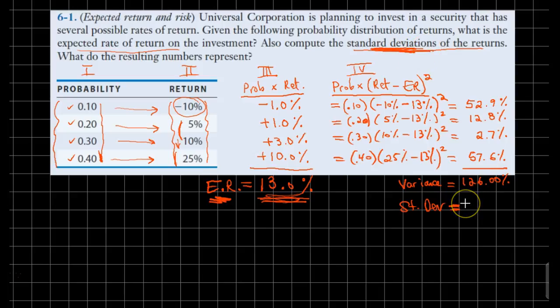So the question makes it specific that that's what we need. The standard deviation. Which is basically the square root of that 126. Taking the square root, we realize the answer to be 11.22%. And that should be the final answer.